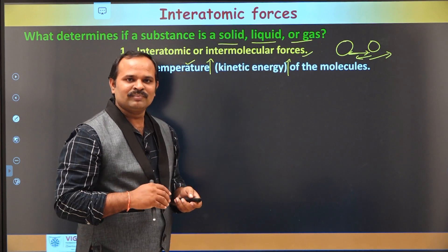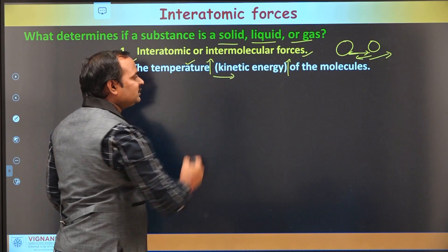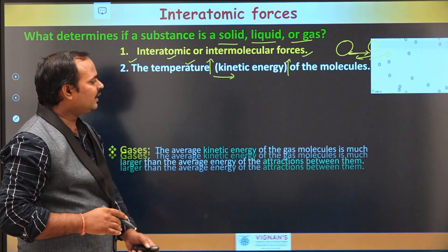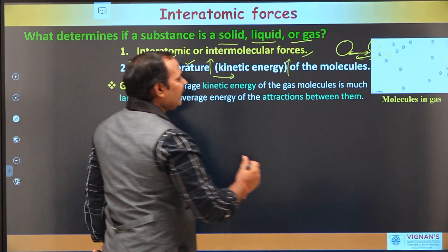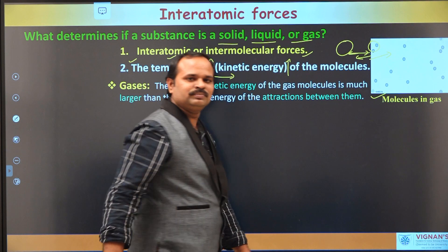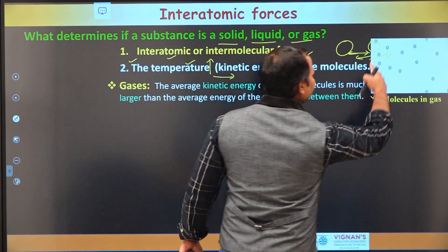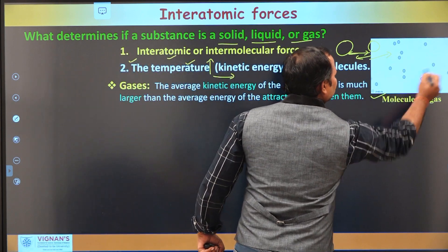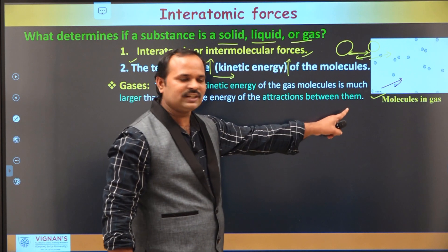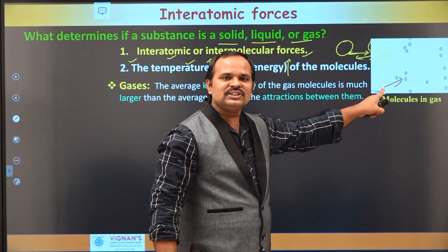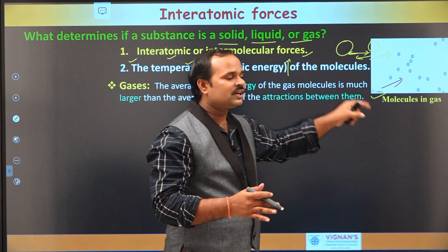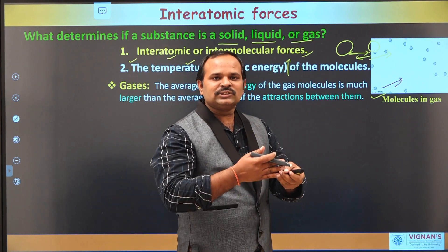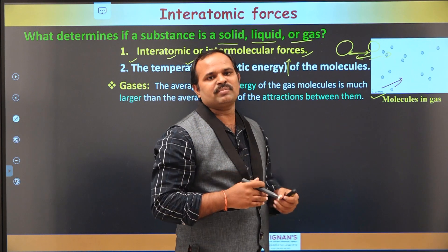For example, if the kinetic energy of the molecules is larger than the interatomic forces in a particular case, then one can expect the material to be in a gaseous state. The atoms are completely moving randomly. This is because the kinetic energy of the molecules in the gas is larger compared to the interatomic forces between them, so these molecules are moving randomly, overcoming the interatomic forces.